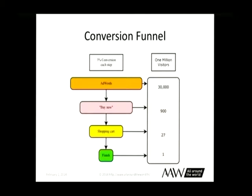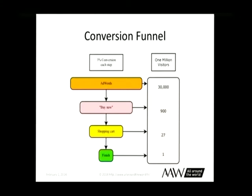Let's say you've got a million people see your AdWords on Google. We assume 3% conversion each step — a made-up number. That means 30,000 people would have clicked your AdWords. For the Buy Now button, 3% of 30,000 puts you down to 900 people. Shopping cart, only 27 people who did not abandon their cart. Then finishing by giving their credit card number, 3% gives us one person. If it costs 10 cents per AdWords click, it just cost you 3,000 euro to get one customer. That gives you an idea of how expensive it can be if you get your conversion funnel wrong.